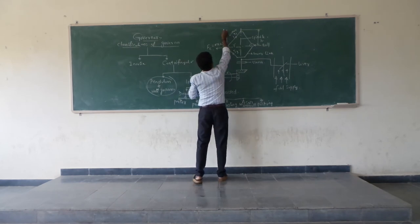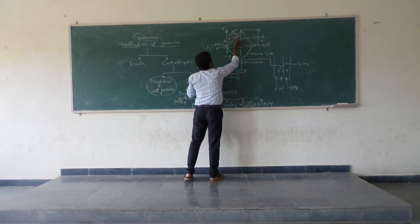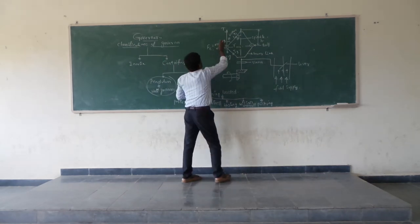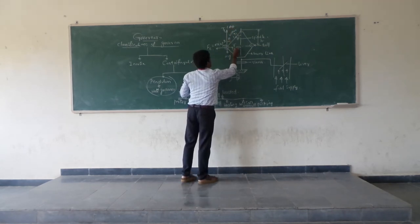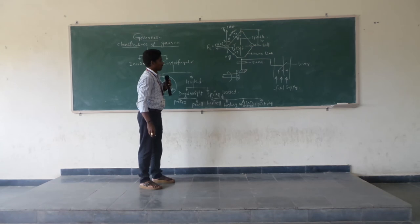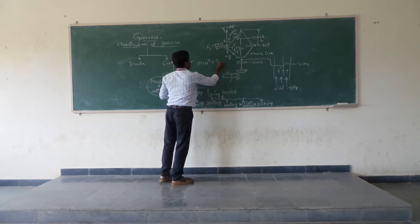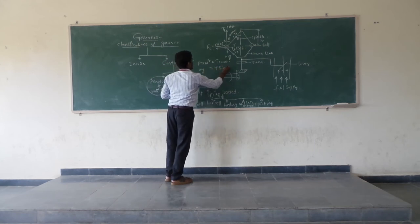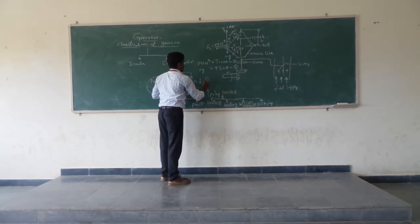For the derivation of the Watt governor, considering angle θ, the equations are: T1·cos θ relates to the horizontal component, and T2·sin θ to the vertical. The centrifugal force equation gives m·r·ω² = T·cos θ (Equation 1), and the weight equation gives m·g = T·sin θ (Equation 2). Dividing Equation 2 by Equation 1: